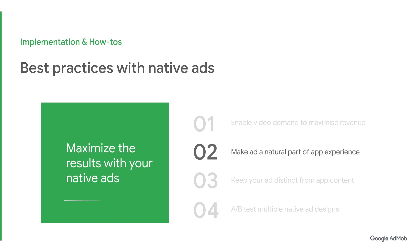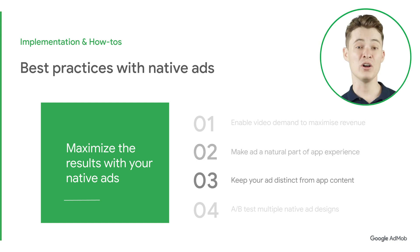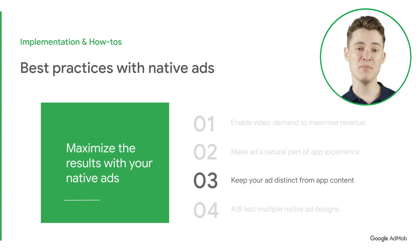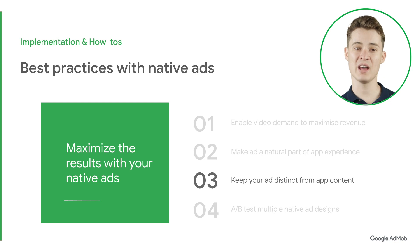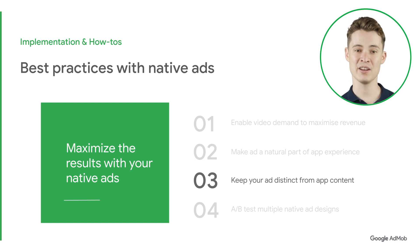Next, take time to understand your user journey and make the ad seem like a natural part of your app experience. You can do this by matching the color, design, and size to the design language of your app's UI. While you want your ad to fit with the look of your app, you also want to make sure your users know your ad is an ad. Make sure your ads are distinct from the content by incorporating subtle changes like elevation or drop shadows. You should also include an ad badge or icon, which we'll be discussing later. These simple design tweaks can help your ad stand out from surrounding elements while still looking like it belongs within your app.